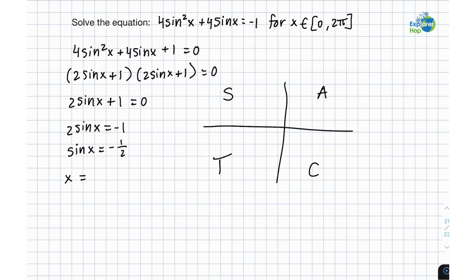Now we know that sine is negative in quadrants 3 and 4. So this would actually be x is equal to 7 pi over 6, which would be this angle. And x is also equal to 11 pi over 6, which would be this angle.